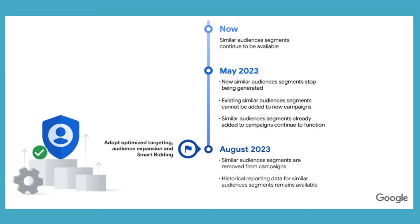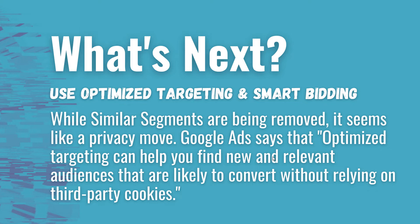Looking at what Google Ads says: by August 2023, adopt optimized targeting, audience expansion, and smart bidding. Similar segments will continue to be available until May 2023 — about six months. At that point, new similar audience segments stop being generated and existing ones cannot be added to campaigns. Segments already added to campaigns will continue to function until August 2023, when they are automatically removed. Historical reporting data will still be available.